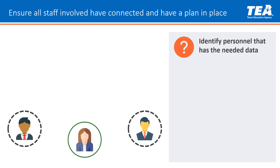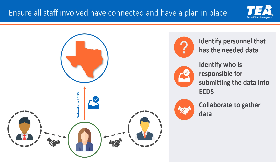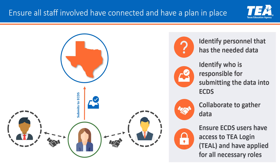The first step is to identify personnel that has the needed data for the submission. Next, identify who is responsible for submitting the data into ECDS. It is important that you all collaborate to gather the data that is needed. Last, ensure that ECDS users have access to the TEA login, or TEAL, and have applied for all necessary roles needed to submit this data.